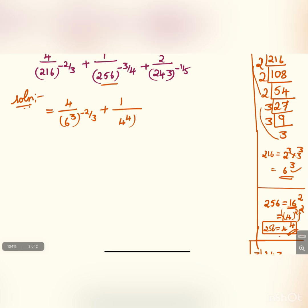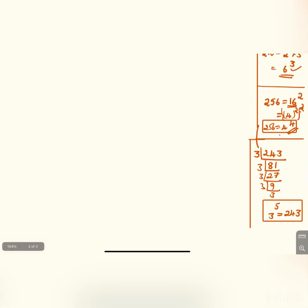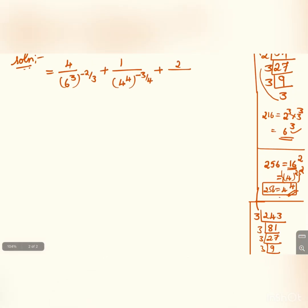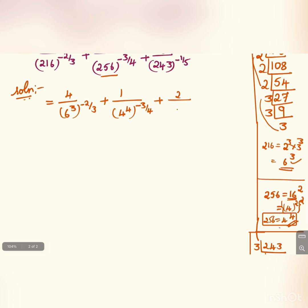Plus 2 divided by 243. 243 is 3 to the power 5. 3 to the power 5, whole to the power minus 1 by 5. I have taken 6 to the power 3.